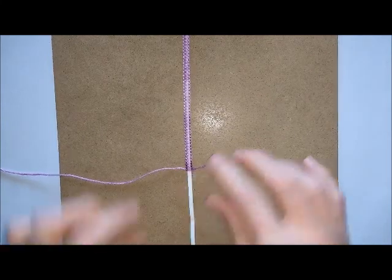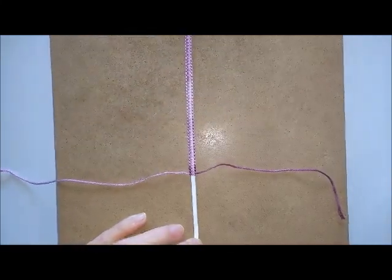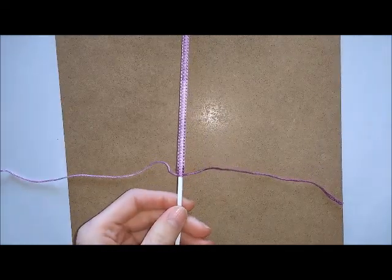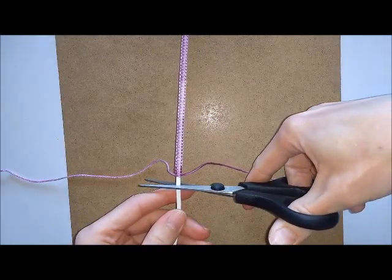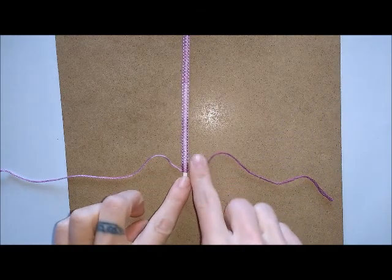Once you have got it as long as you want it, make sure everything is nice and tight. Then unclip your cord from the bottom of the board and trim the excess. You want to leave a little bit for adding your clasps or whatever you are going to use to fasten at the end.